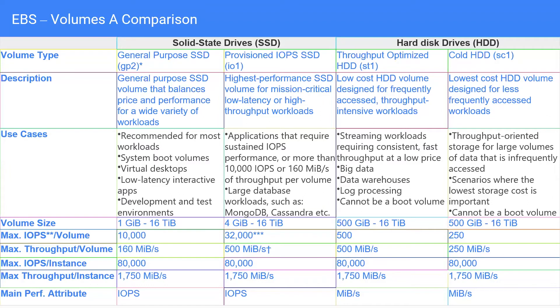Hard disk drives are cheaper, so whenever you have a use case involving large amounts of data — such as data warehouses, storing log data, or big data applications — you would go for throughput optimized HDD. Wherever streaming workloads are higher and you don't have much transactional workload, you go for throughput optimized HDD. Cold HDD is the lowest cost storage, used for less frequently accessed data, and most suitable where you have high volume data that is accessed infrequently.